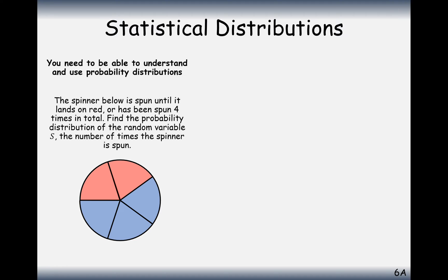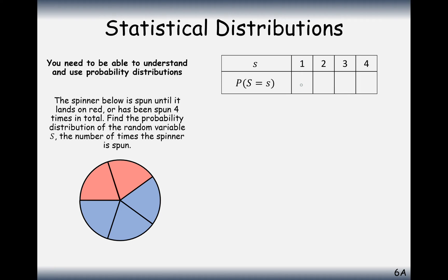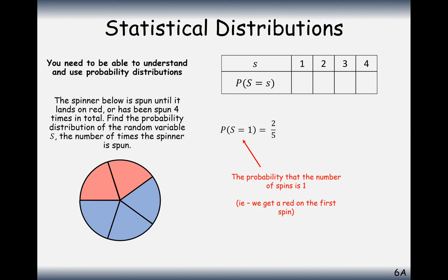Final example before you have a go yourself: a spinner is spun until it lands on red, or until it's been spun 4 times in total. Find the probability distribution of the random variable S, the number of times the spinner is spun. The spinner can land red on the first spin, or blue then red on the second, or blue-blue-red on the third, or on the fourth spin it could be blue-blue-blue-red or blue-blue-blue-blue. The spinner has 2 red sections and 3 blue sections out of 5 equal sections, so P(red) = 2/5.